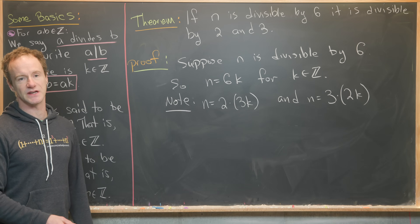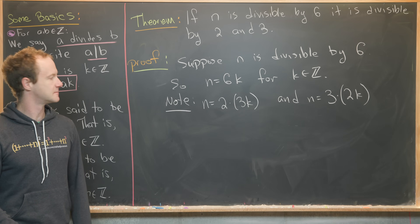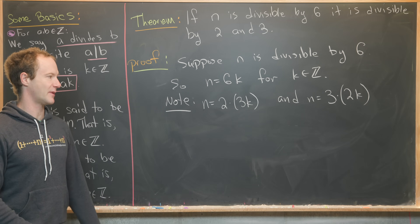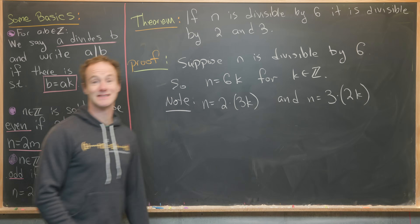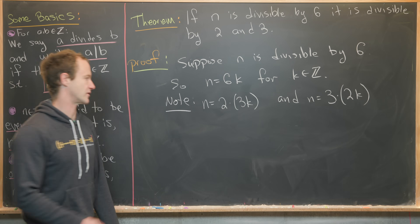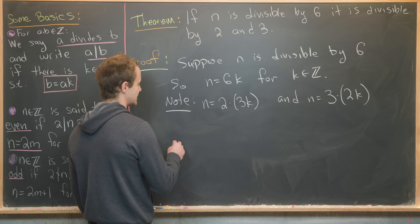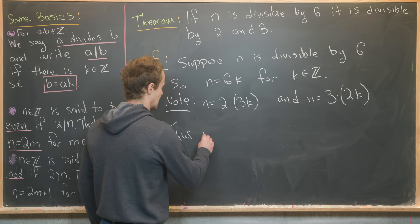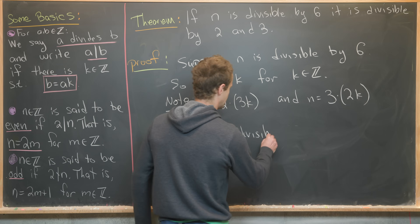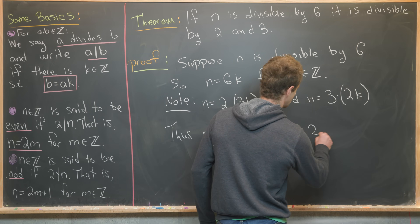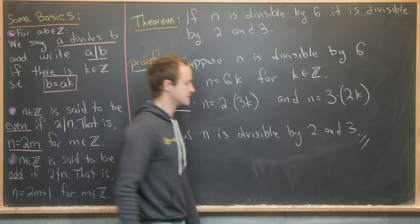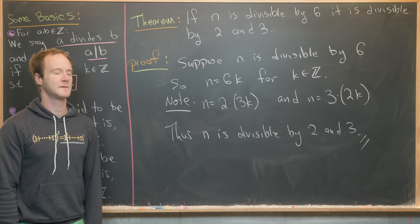Notice that n equals 2 times 3k, and n equals 3 times 2k — that's just by the factorization of six. The first expression implies n is divisible by two, and the second is exactly the definition of n being divisible by three. Thus, n is divisible by two and three.